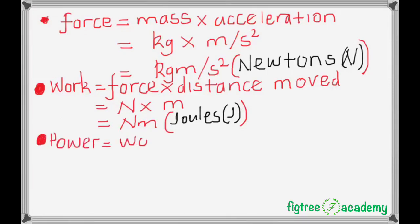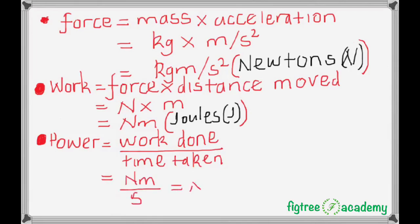And the next example for a physical quantity that has a special name for its unit is power. From the formula of power, which in this case is work done divided by time taken, we expect its units to be Newton meters per second, but power is given units watts, which are abbreviated as W.